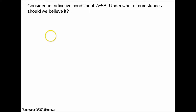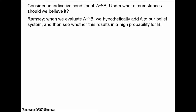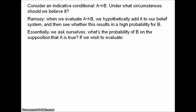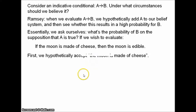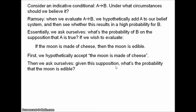A famous suggestion from Frank Ramsey is that when we evaluate an indicative conditional — what we do when we evaluate if A then B — is hypothetically add A to our belief system and then see whether this results in a high probability for B. So essentially we ask ourselves: what's the probability of B on the supposition that A is true? Suppose I wish to evaluate the conditional: if the moon is made of cheese, then the moon is edible. What I do is provisionally accept the proposition that the moon is made of cheese, then ask myself, on this supposition, what's the probability that the moon is edible? I would say quite high — most cheese is edible after all — so the conditional is probably true.